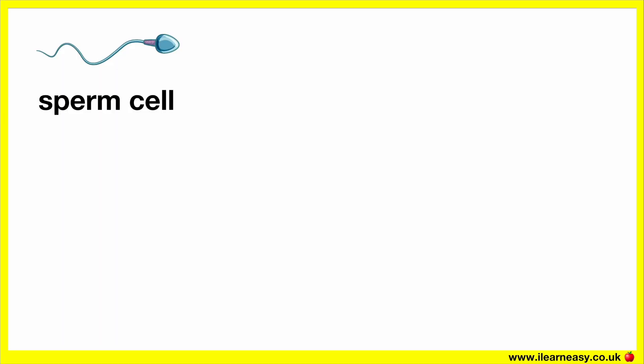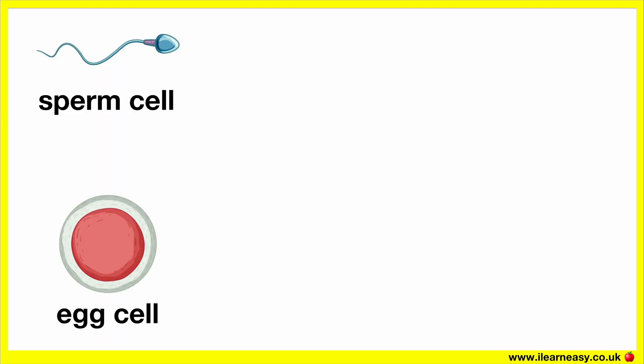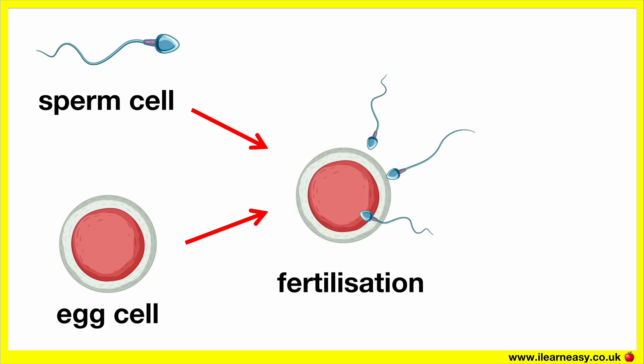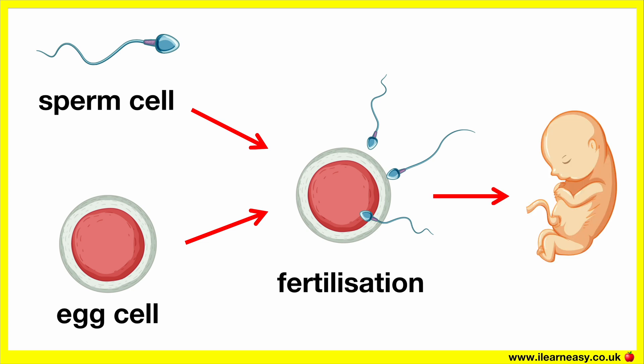This is a sperm cell. This is an egg cell. Fertilisation is the process in which the nucleus of a sperm cell fuses with the nucleus of an egg cell to produce a zygote. The zygote will eventually grow into offspring.